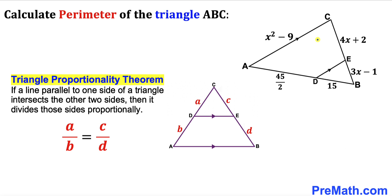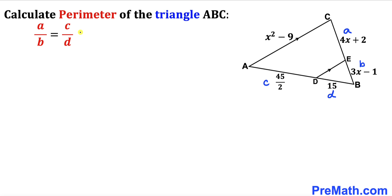Now let's apply this to our problem. Filling in the blanks in this formula: CE over BE equals AD over BD, which gives us 4x plus 2 divided by 3x minus 1 equals 45 divided by 2 divided by 15.